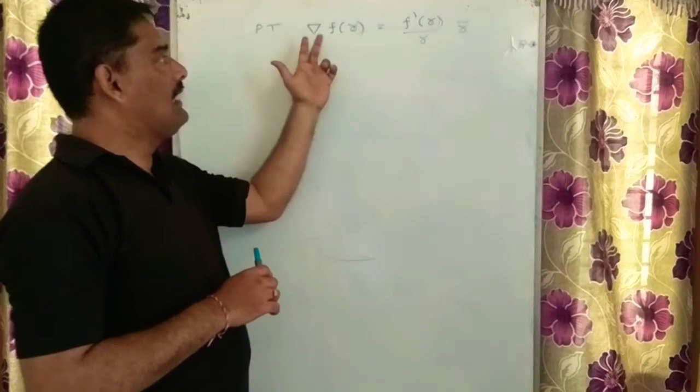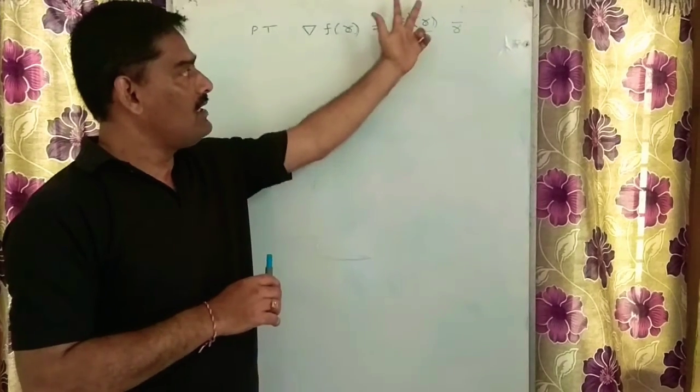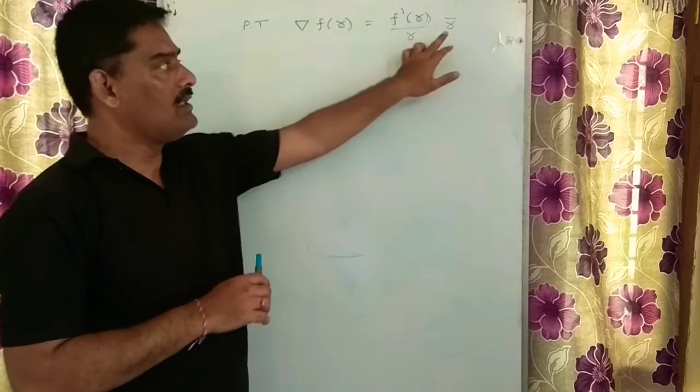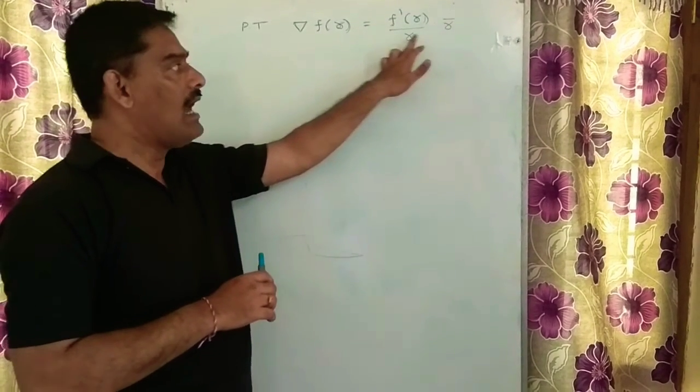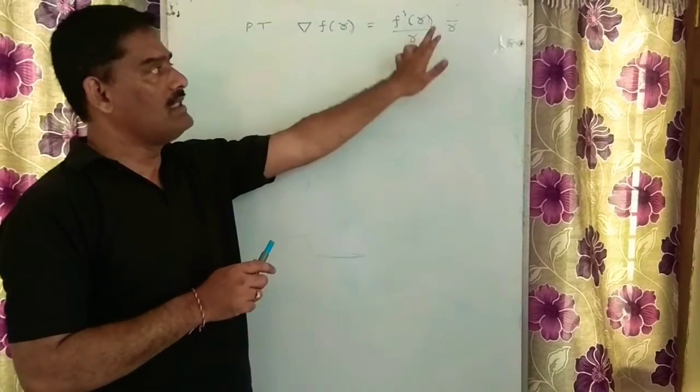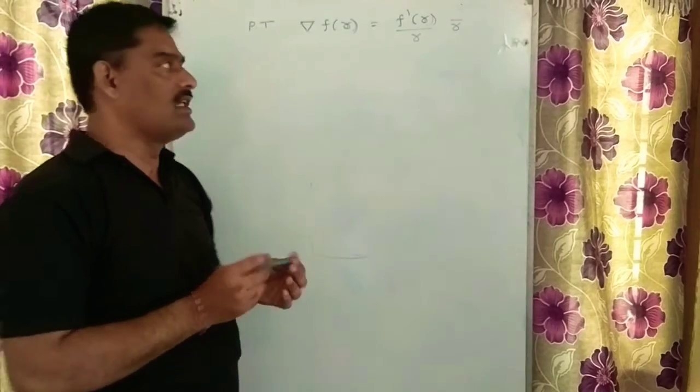Prove that del of f of r equals f dash of r by r into r bar. Remember, r bar stands for positional vector, and r is nothing but the modulus of r bar. Based on that information, we need to prove the given statement.